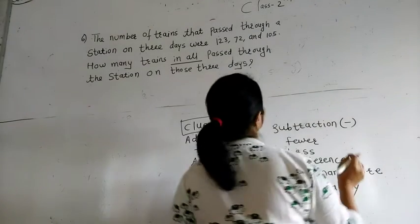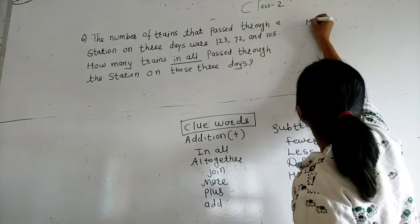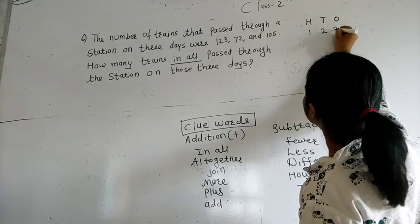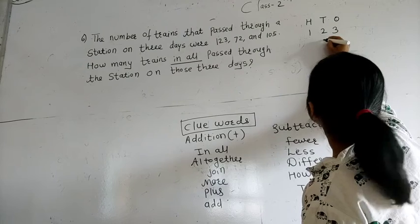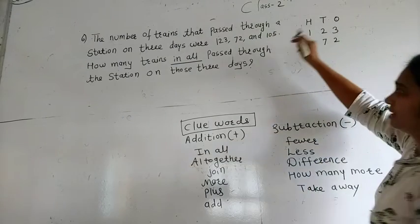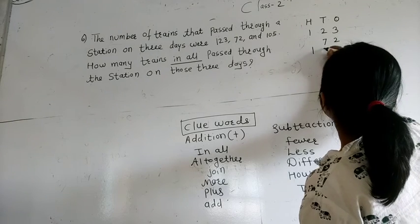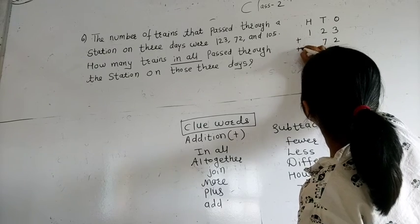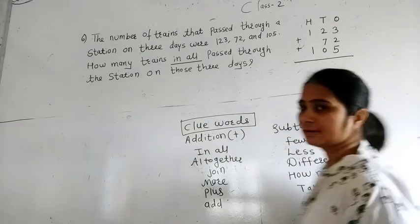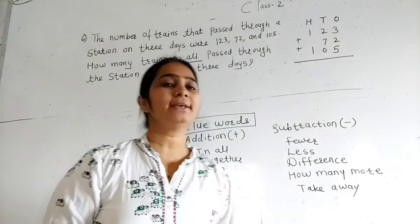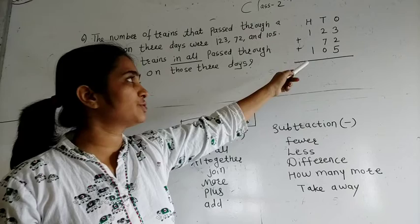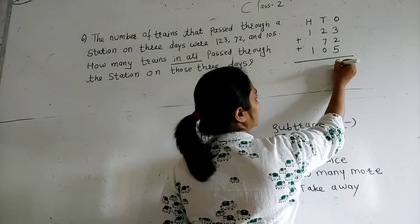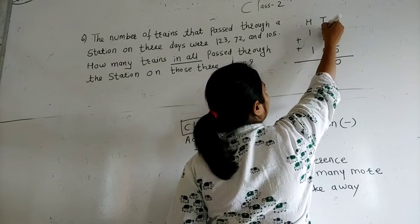Now first I write the numbers according to their places: 123, then 72 — in the tens and ones columns — and then 105 in the respective columns. We have to do addition. Starting from the ones digit: 3 plus 2 is 5, and 5 plus 5 is 10. So I write 0 here, and carry 1 to the tens column.